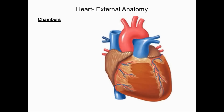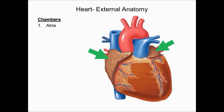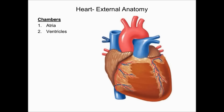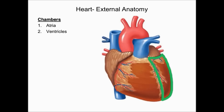Next, we take a look at the external anatomy of the heart. The heart has four chambers — two upper chambers and two lower chambers. The upper chambers are called atria, and the lower chambers are called ventricles. In this illustration you can see the right atrium, the left atrium, the right ventricle, and the left ventricle.